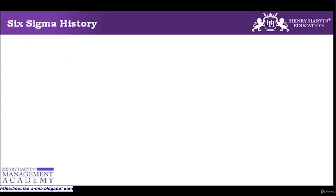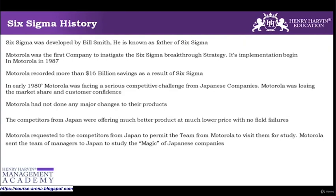Now we'll talk about what is Six Sigma. Six Sigma was developed by Bill Smith — he's known as the father of Six Sigma. The first company to start Six Sigma was Motorola, in 1987. Motorola was the first company to give a methodology called Six Sigma. Prior to that, there were a lot of problem-solving methodologies being used to resolve issues, but Motorola came up with the Six Sigma kind of methodology. These are some expected results from Six Sigma — I designed this slide to help you understand what sort of problems and issues can be resolved using Six Sigma.